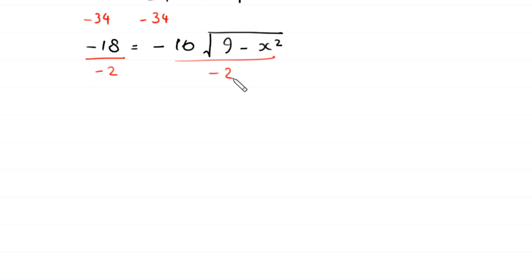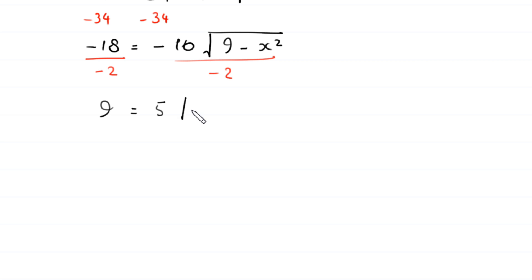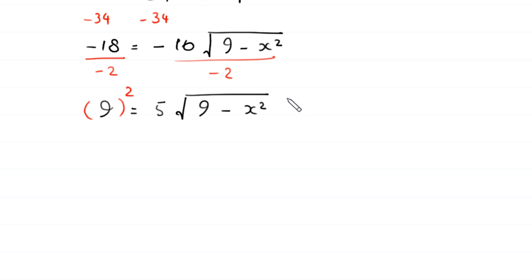We divide both sides by negative 2: negative 18 divided by negative 2 gives 9, and negative 10 divided by negative 2 gives positive 5, so we have 9 equals 5 times square root of (9 minus x squared). From here we square both sides again.